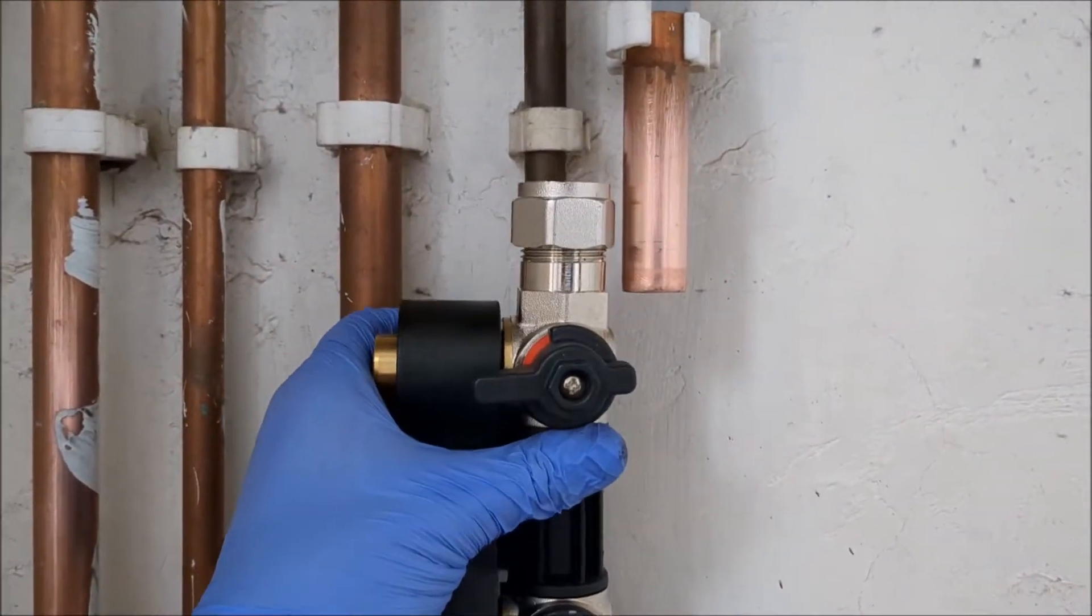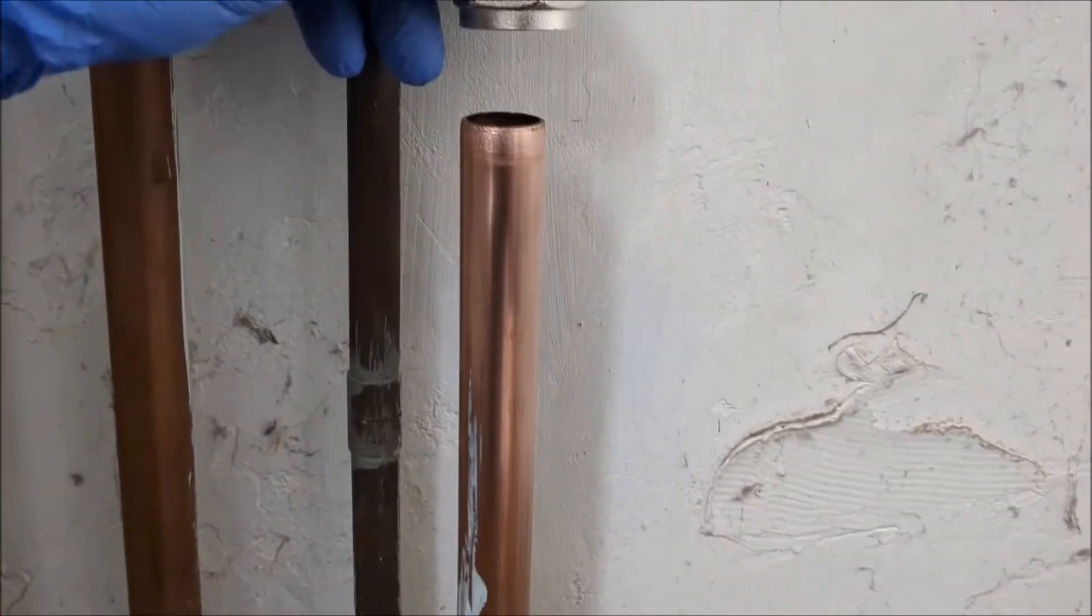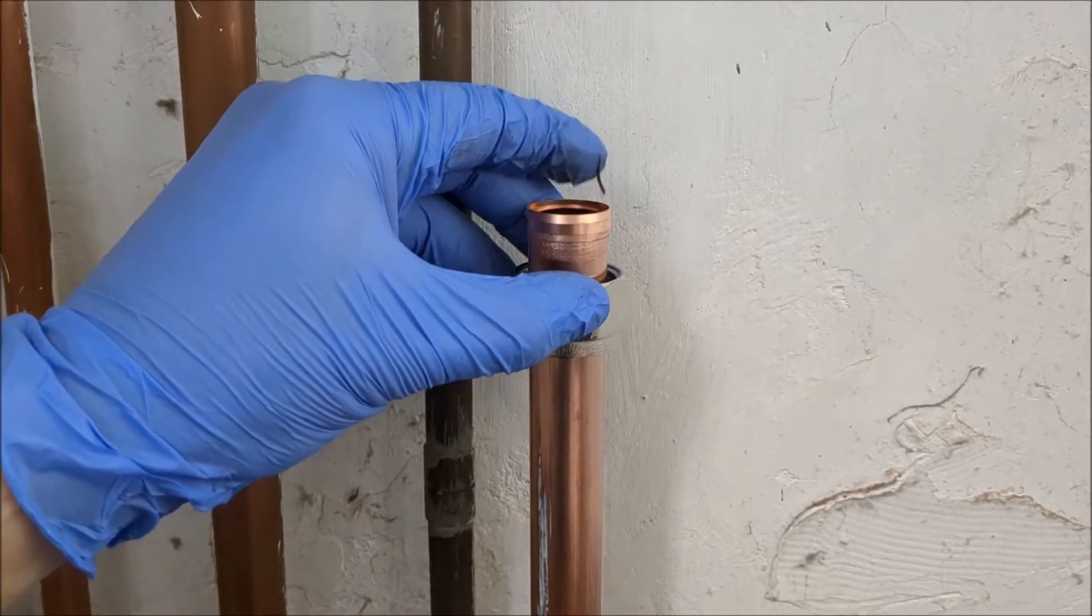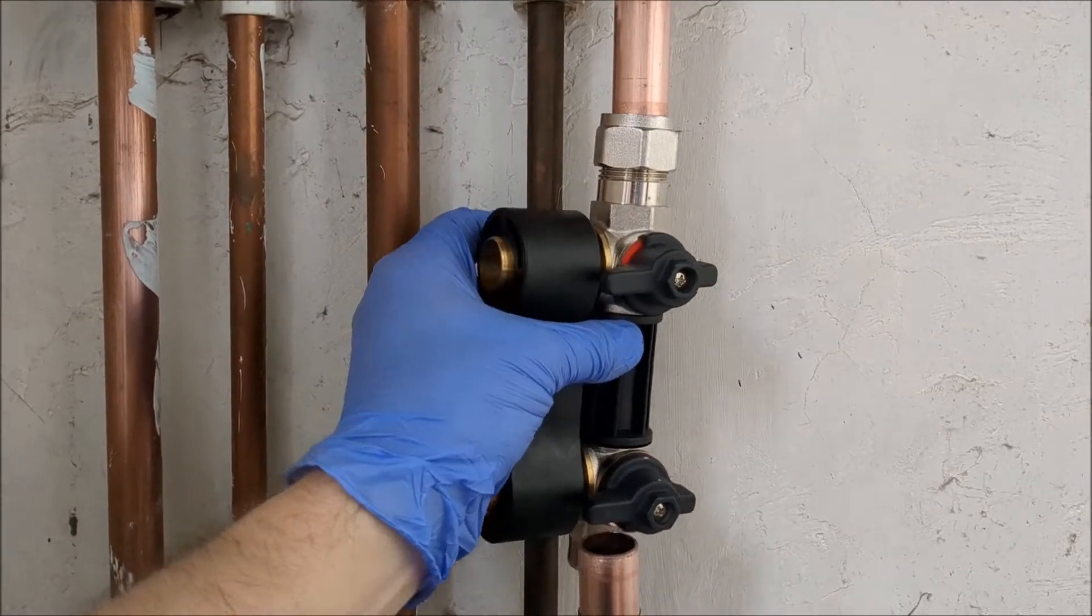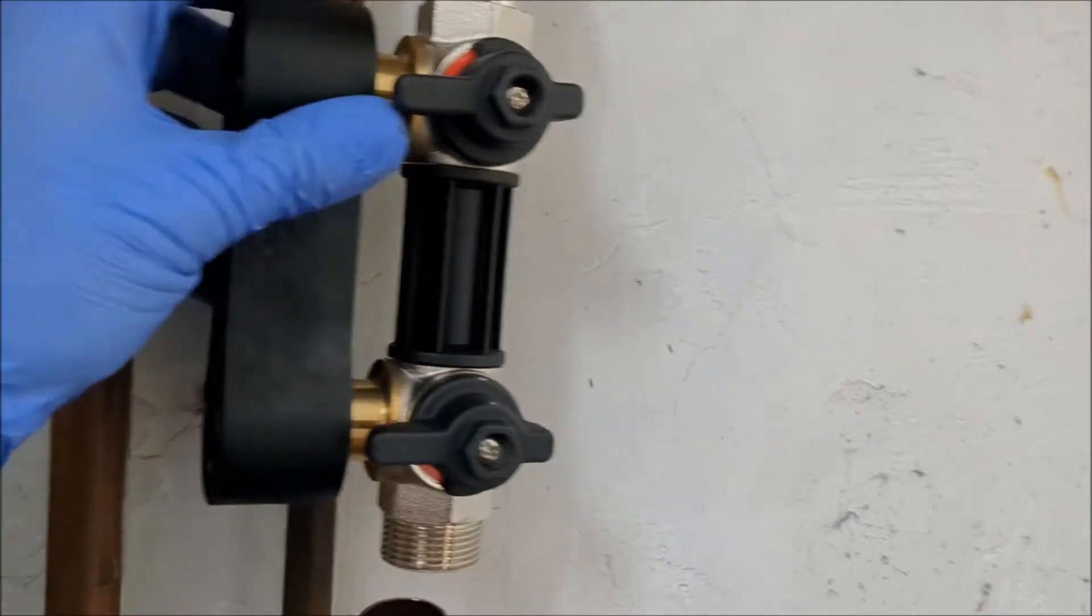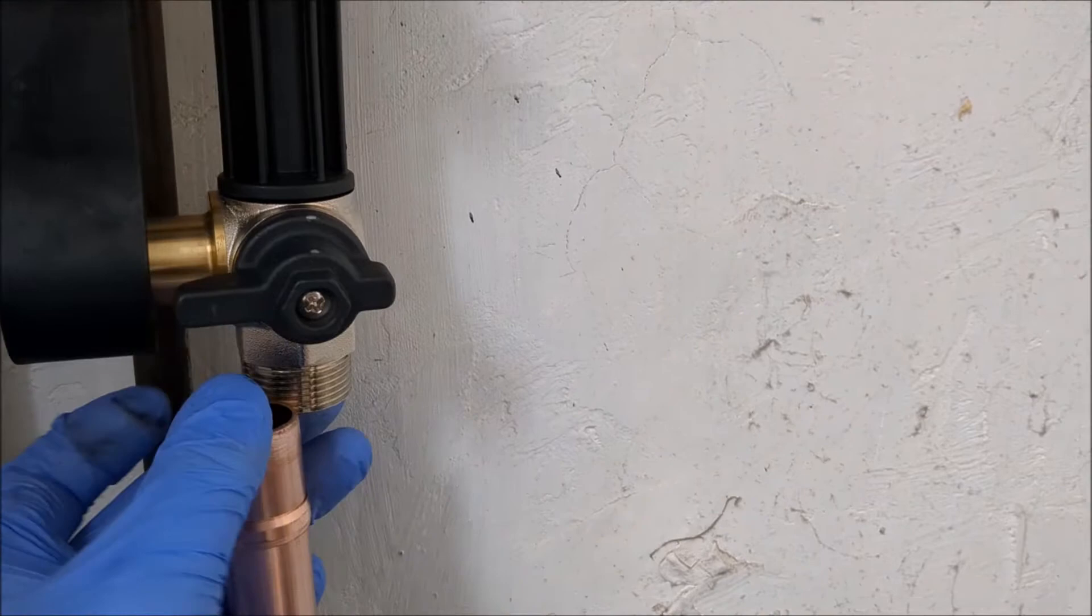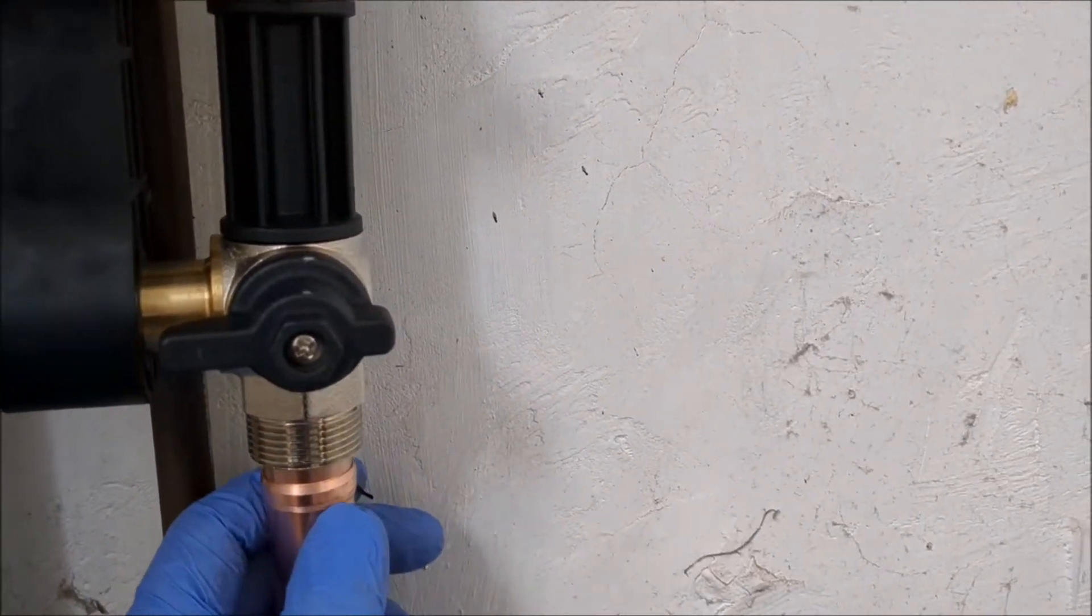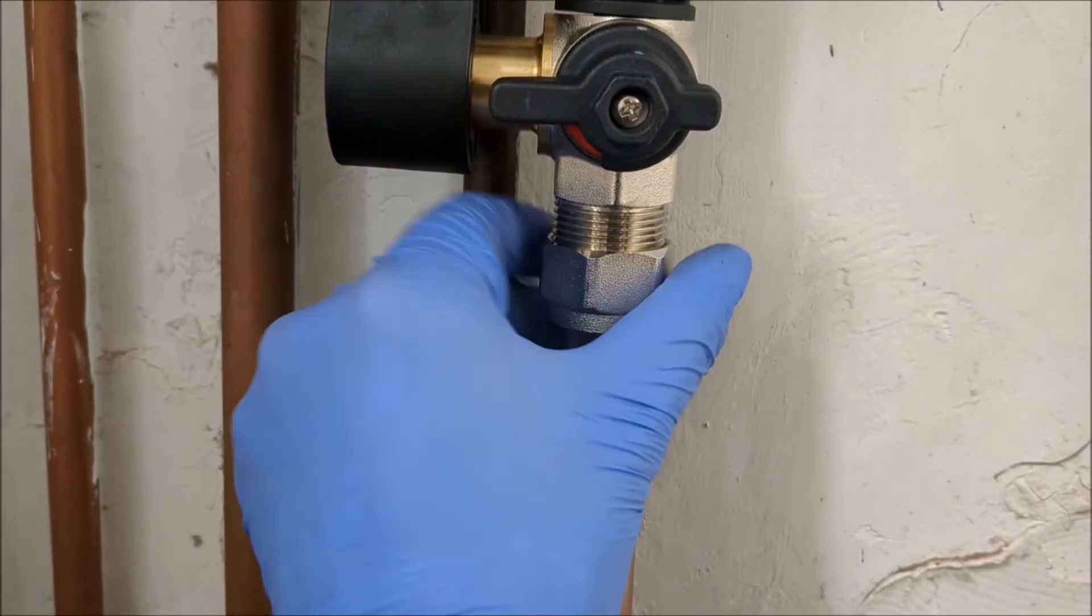Remove the nut and olive from the lower MagnaClean isolation valve B and put them on the lower pipe. Slide the valve assembly onto the upper pipe with isolation valve A on top, then slide down onto the lower pipe until it stops. Slide up and reattach the nut to valve B.